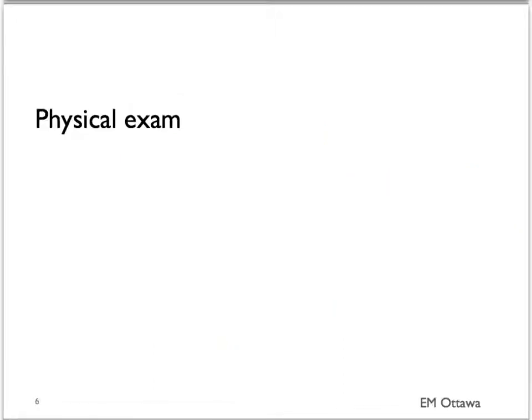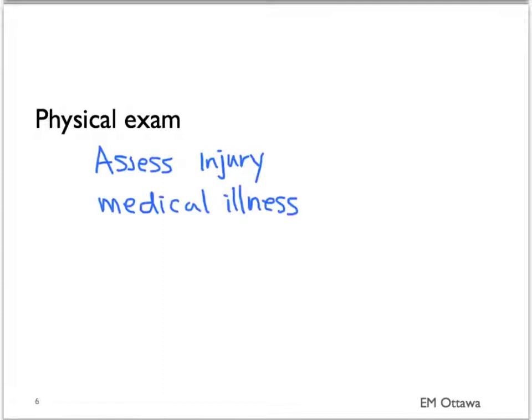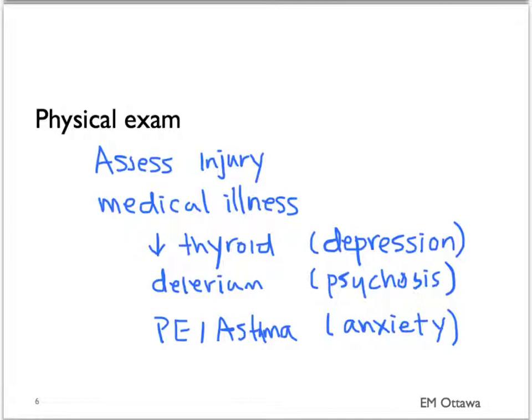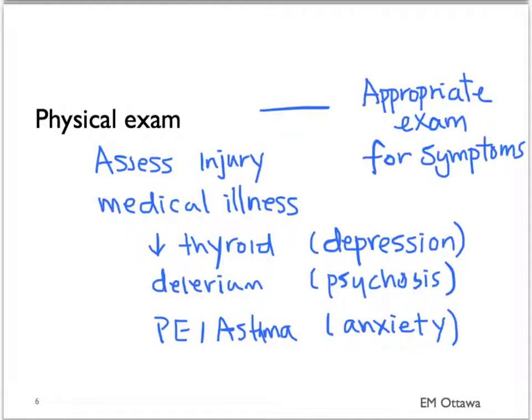For the physical exam, first we have to assess the injury caused by the suicidal attempt. There are also medical conditions that mimic psychiatric conditions. Hypothyroid can look like depression. Delirium can look like psychosis. Conditions such as PE and asthma can look like a panic attack or anxiety. Therefore, based on the patient's presenting symptoms, the appropriate physical examination should be done.